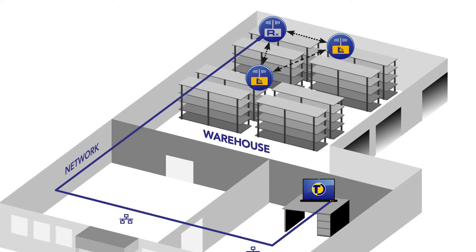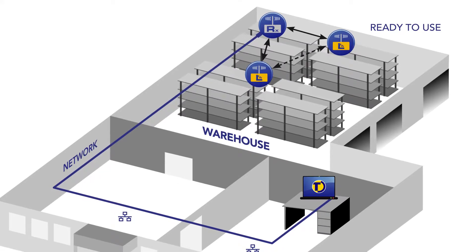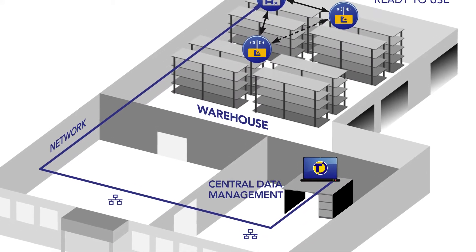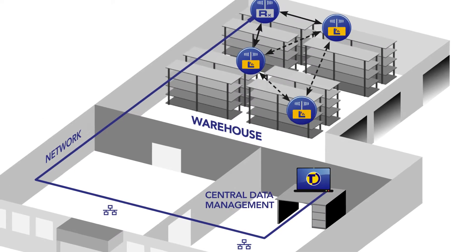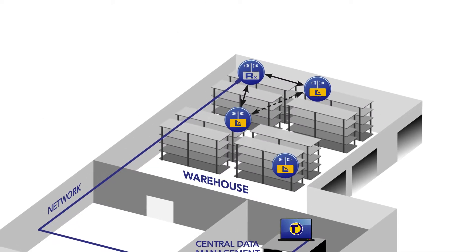They can be placed up to 200 metres apart on a direct line of sight. The loggers will communicate with each other and find the optimum path to send their data via a receiver, which is connected to a network access point or a computer. If extra loggers are added or moved, the mesh network automatically adjusts itself.